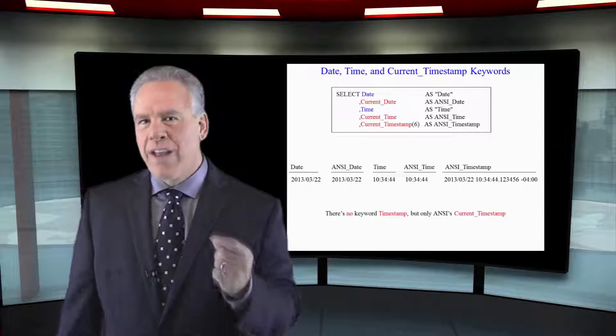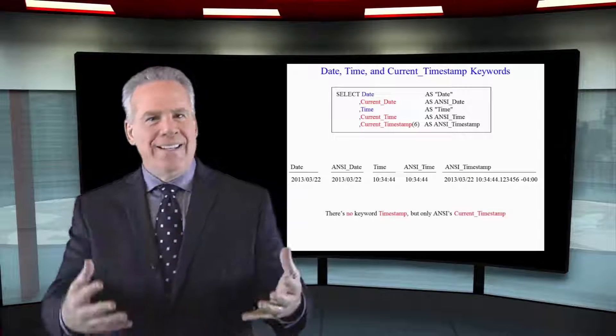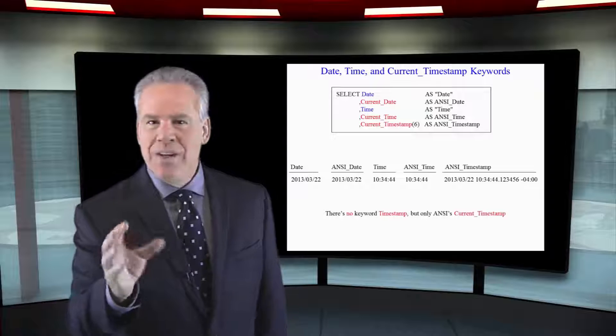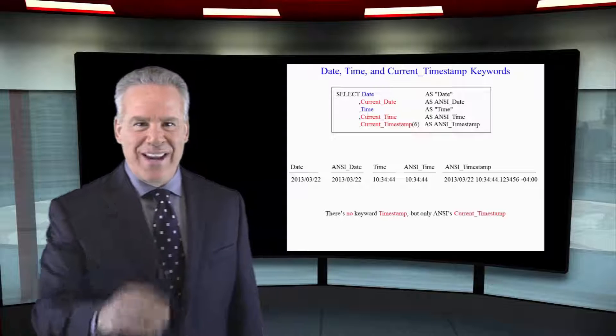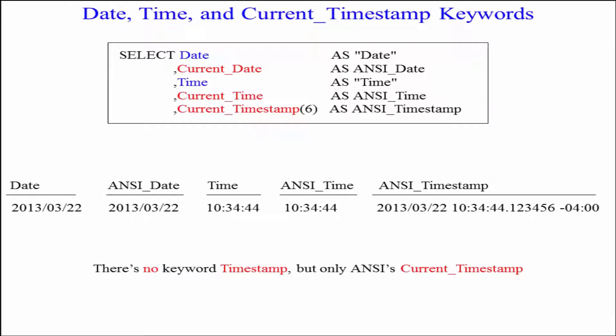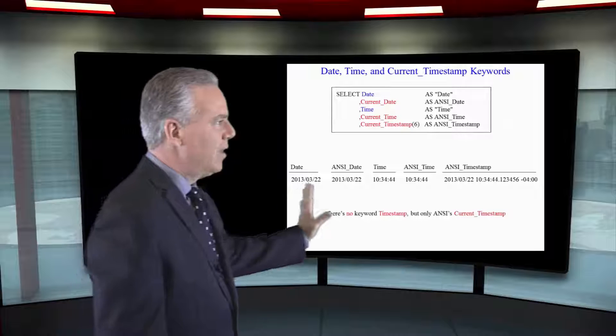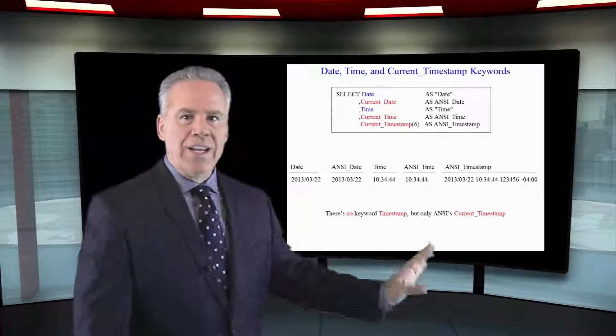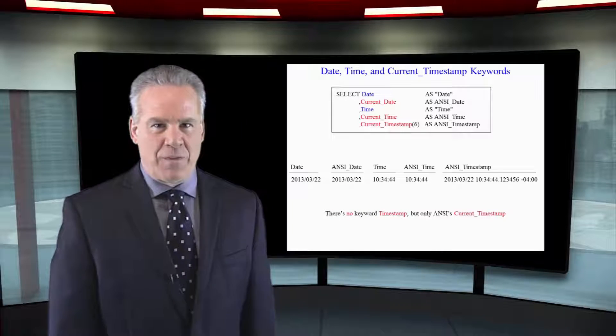If you're using Oracle, you're going to have to pull date information from Dual, but not in Teradata. As you can see here, select date, current date, time, current time, and current timestamp. There is no timestamp keyword here — only current timestamp. But as you can see, you will then get your date and time and timestamp information.